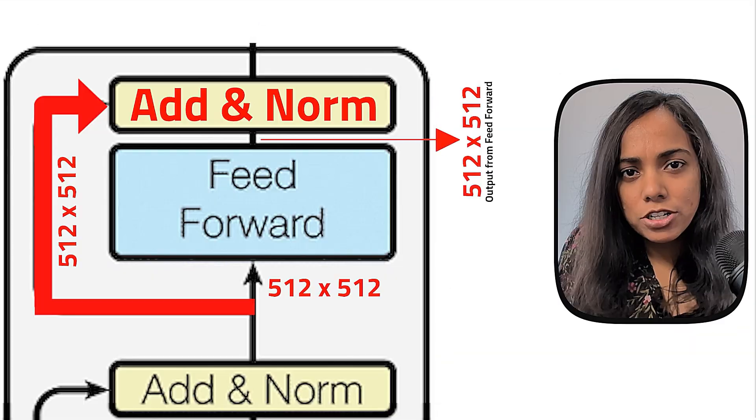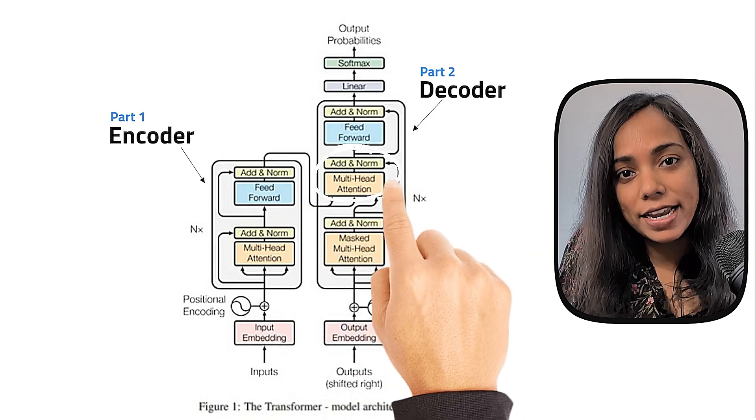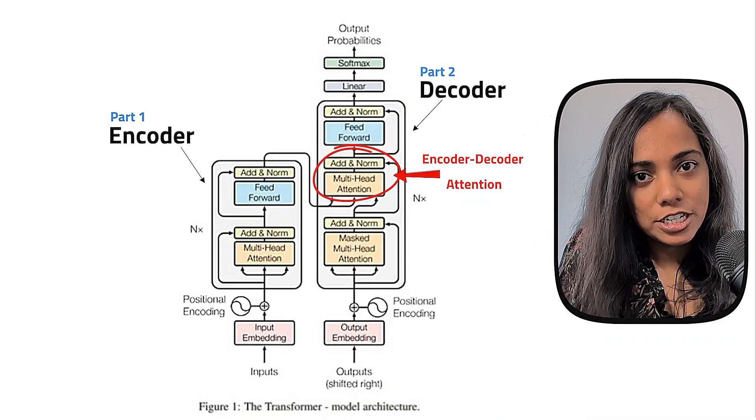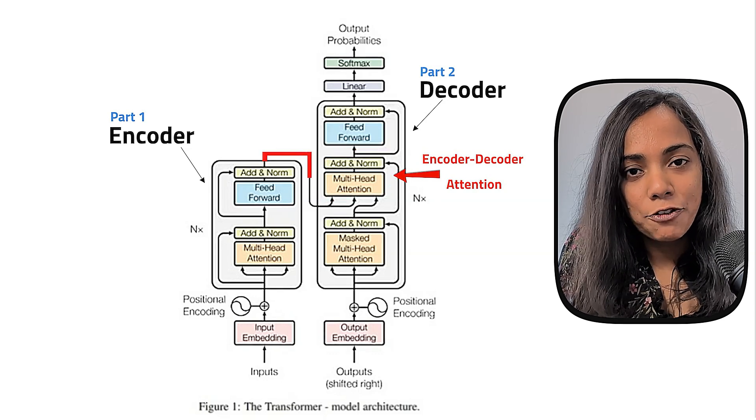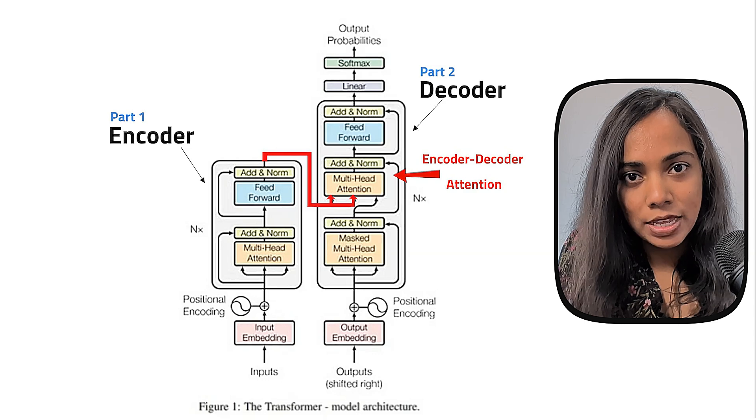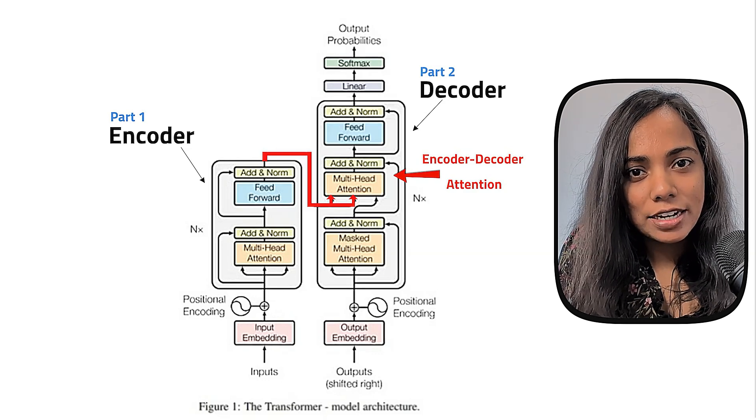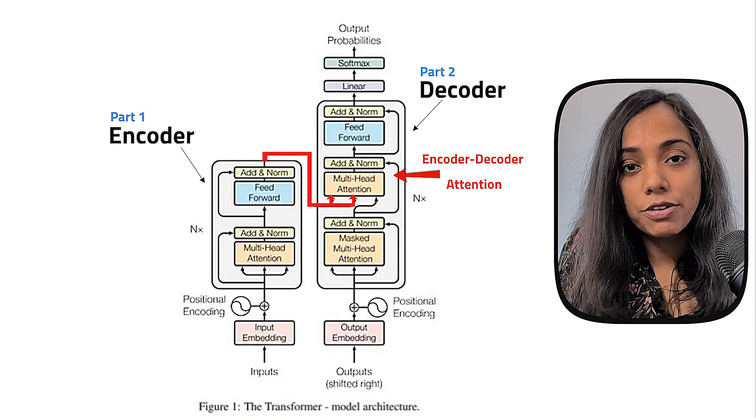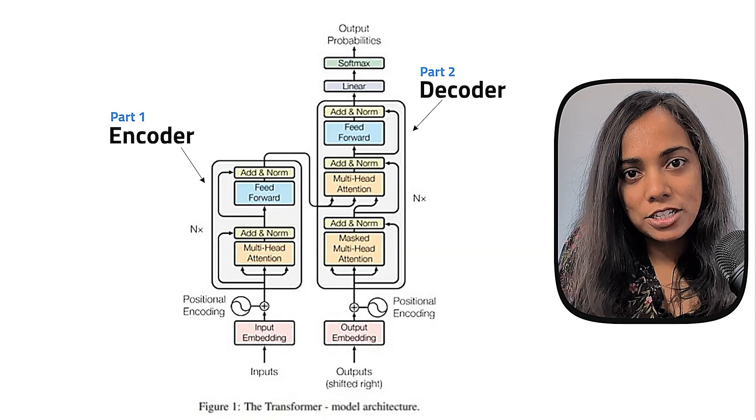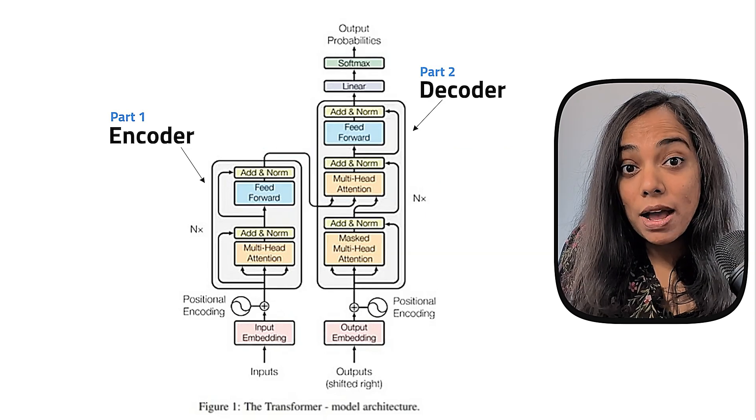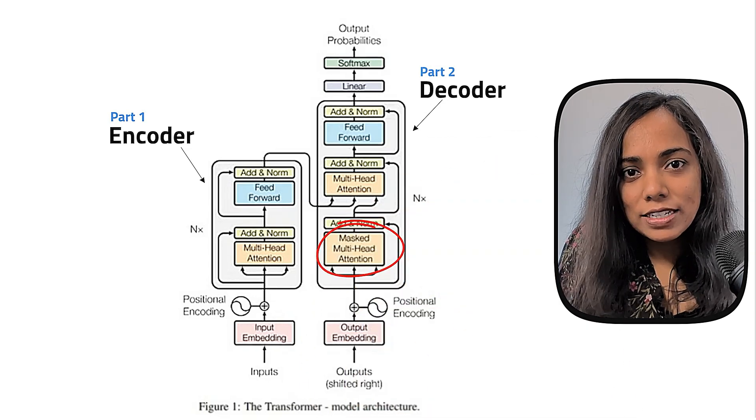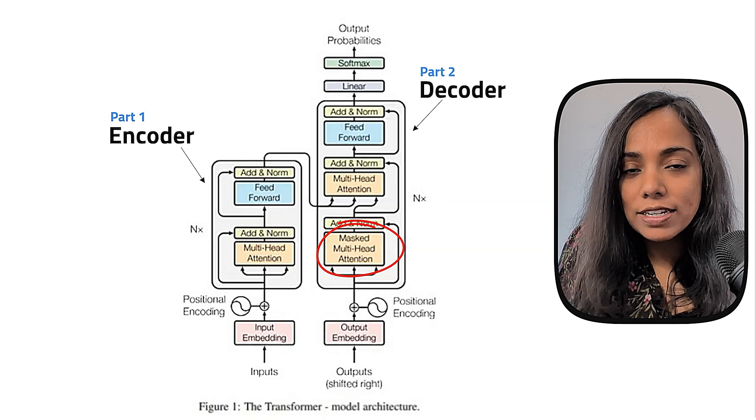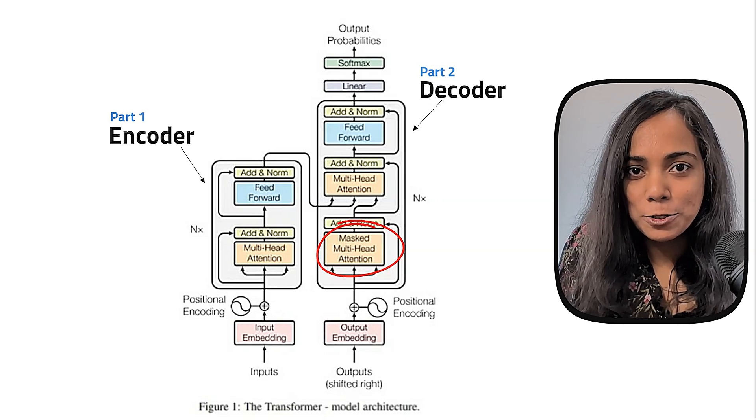The decoder structure is similar to the encoder structure but it has one key addition called encoder-decoder attention. This special attention allows the decoder to directly reference the input sentence from the encoder when generating words. It's like glancing back at the original question before giving your answer. Another unique aspect of the decoder is the masked self-attention. So the masking here ensures that the decoder can only use words that it has already generated in the past. So no peeking ahead.